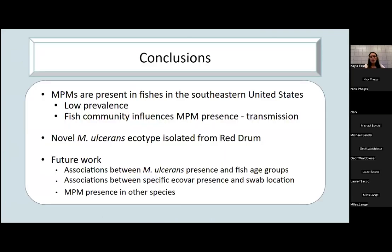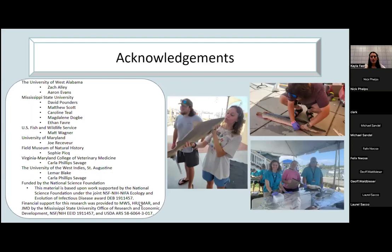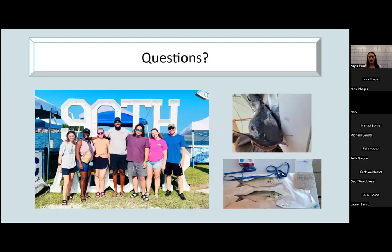So conclusions. There was low prevalence of NPMs present in fish in the southeastern United States. Fish community influences NPM presence and possibly transmission. We isolated a novel mycobacterium ulcerans ecotype from a red drum. Our future work includes looking at associations between mycobacterium ulcerans presence and fish age groups, associations between specific ecovar presence and swab location, and looking for NPM presence in other species as well. I'd like to acknowledge everybody who's helped on these projects and our funding. Any questions?